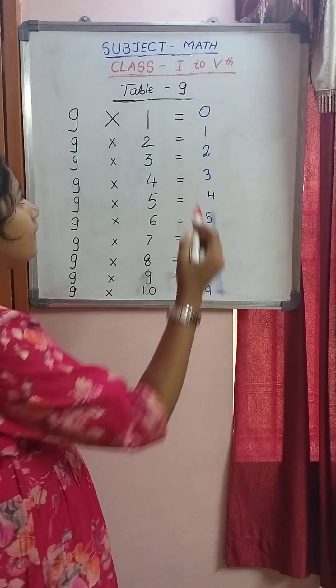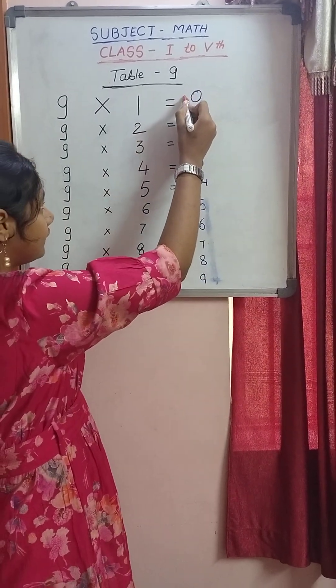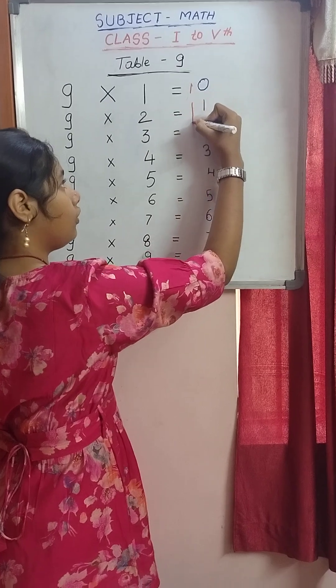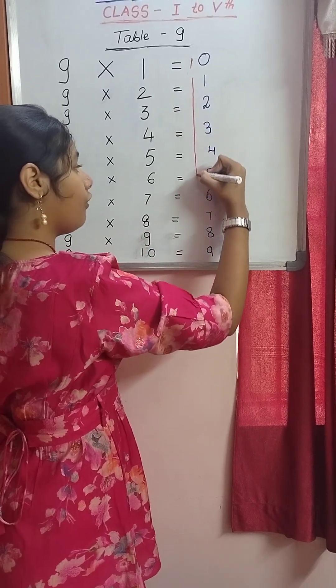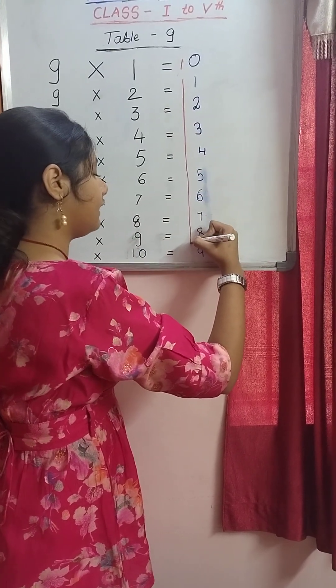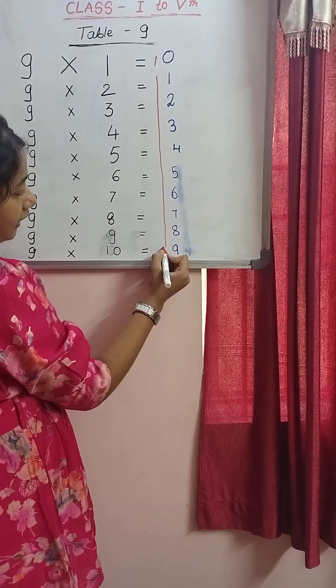So now this is going like this. So zero, 1, 2, 3, 4, 5, 6, 7, 8 and 9.